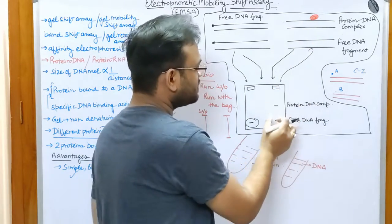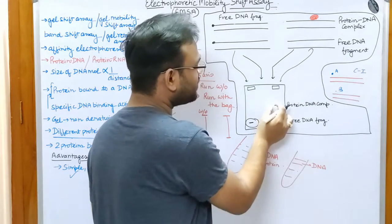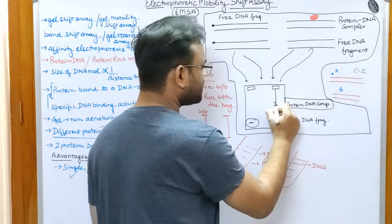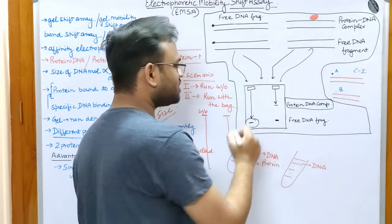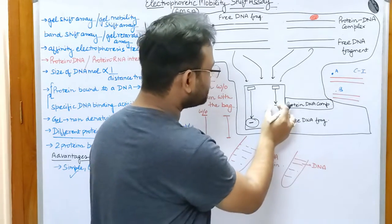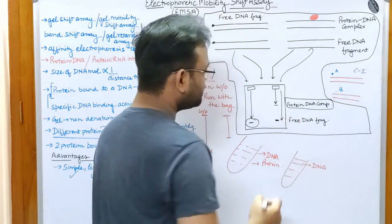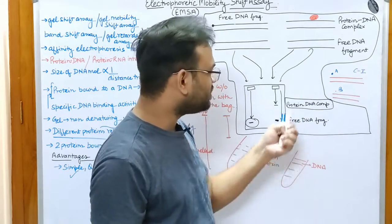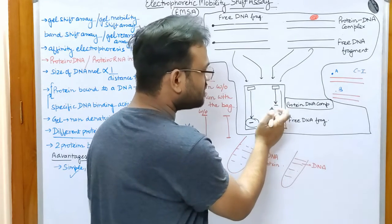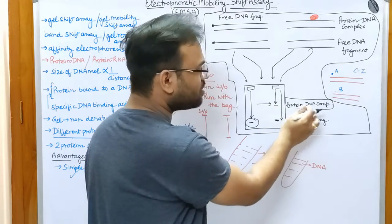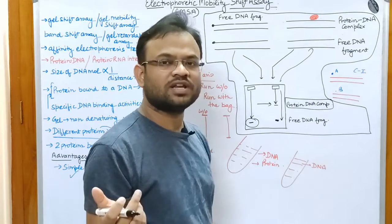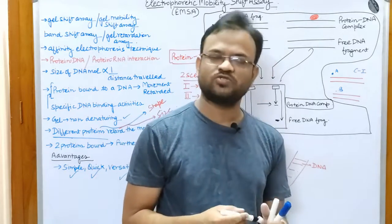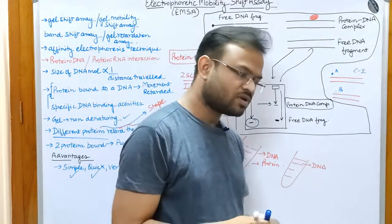In the second case there are two bands: a thinner band showing the protein-DNA complex, which has migrated a shorter distance due to retardation, and another band showing the free DNA fragments that did not bind to the protein. The thinner upper band represents the protein-DNA complex, and the lower band represents the free DNA.